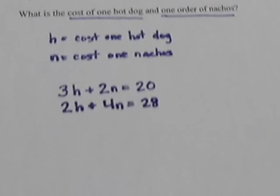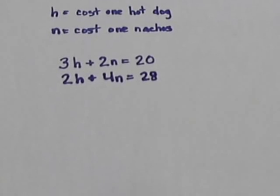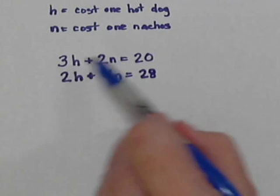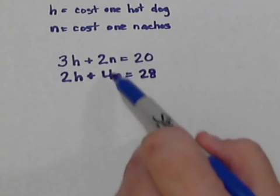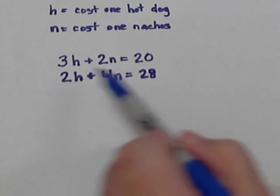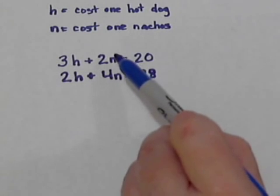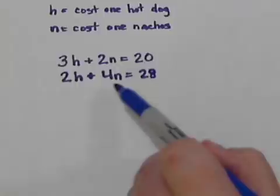Now we want to solve these. The way to solve a system of equations when you have it in this form is you want to get one of the variables, either the h's or the n's, to cancel. You can do either one. If you want to cancel the n's, it might be easier to cancel the n's.